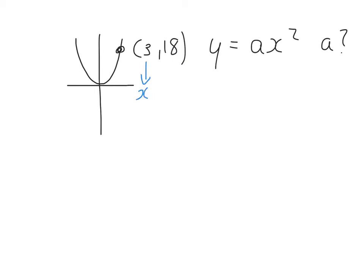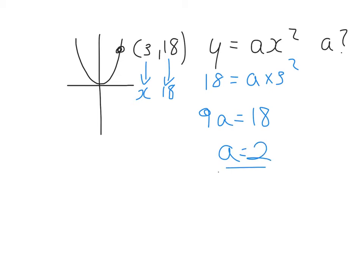When x equals 3, y is equal to 18. I can sub that in: 18 equals A times 3 squared. 3 squared is 9, so 9A equals 18, and A is equal to 2. That's question 1.